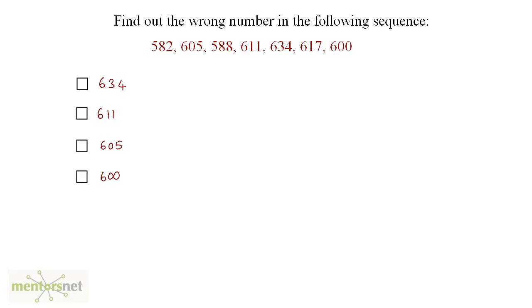Find out the wrong number in the following sequence. Whenever we have a sequence of numbers, there is some formula or pattern to calculate the next number. If we take the first two numbers and find the difference of 582 and 605, we need to add 23 to 582 to get 605.